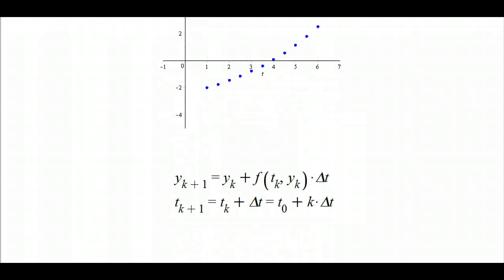Below here are the formulas for Euler's method. So to compute the next approximate y value, you take the previous y value and add on f of the previous time and the previous y times delta t.